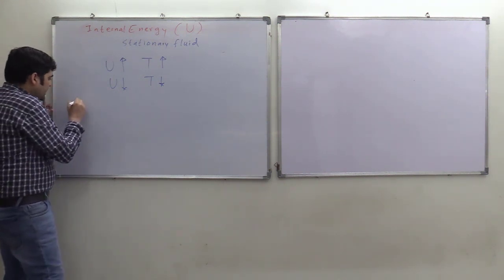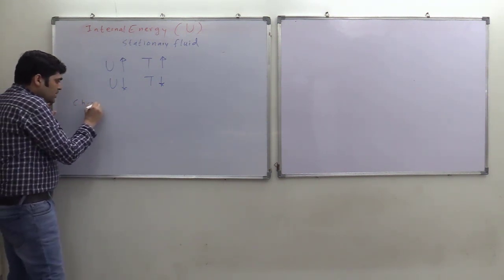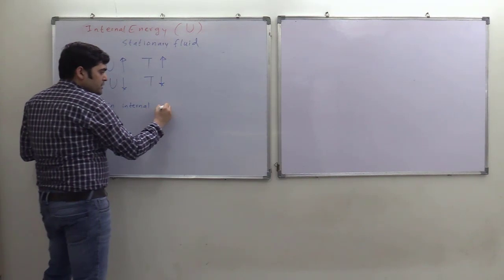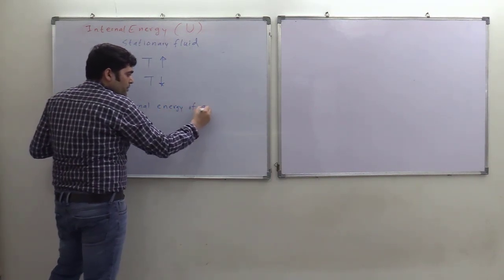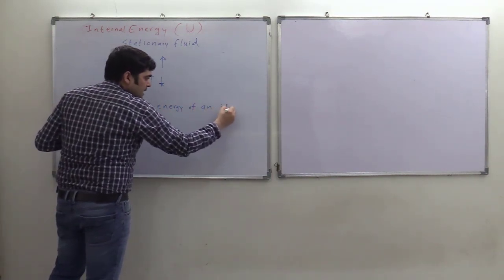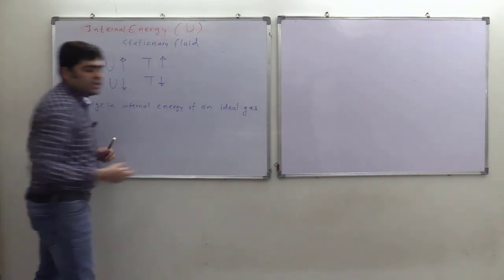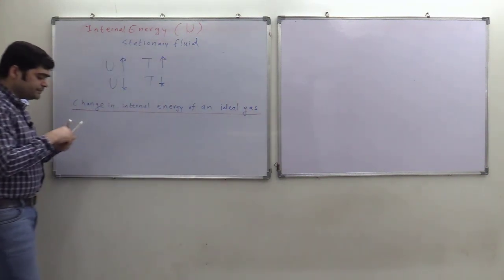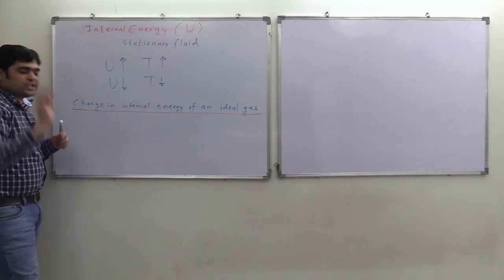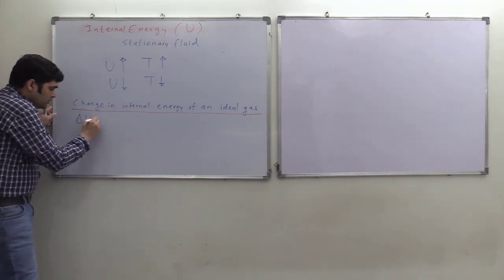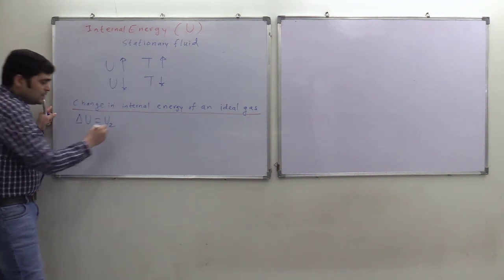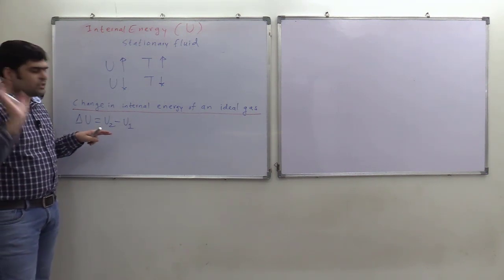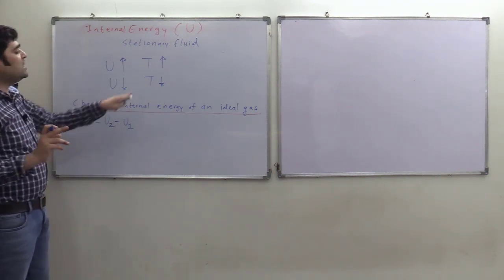The next point is the change in internal energy of an ideal gas. If you want to find out the change in internal energy of an ideal gas, change means delta U, which is final energy minus initial energy. That is a generalized term for any change — final minus initial — and this applies to change in internal energy of an ideal gas.